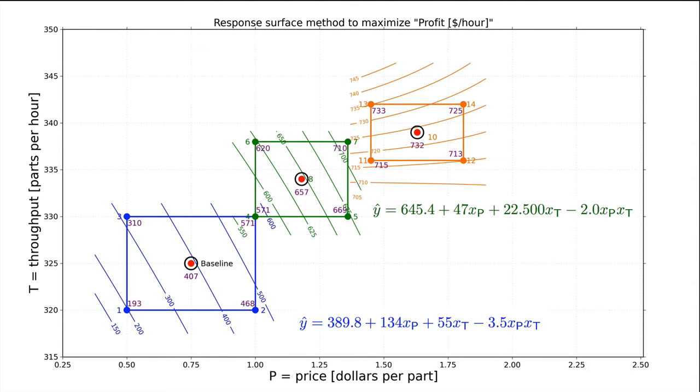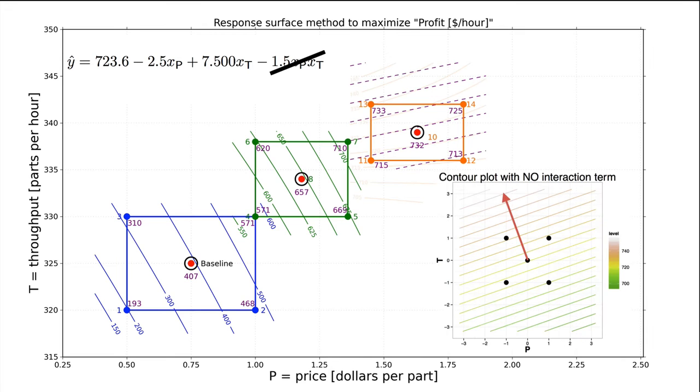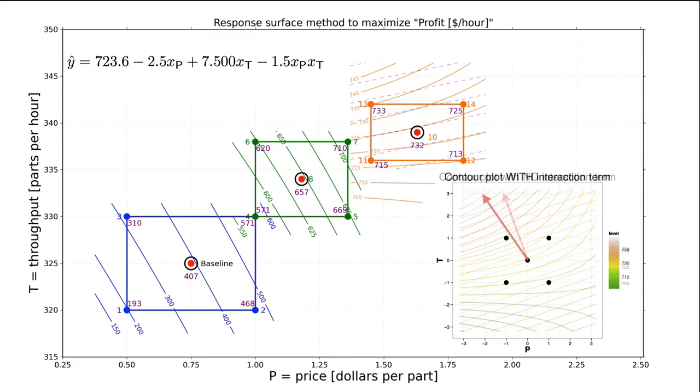In prior models, the interaction term was small. Notice though, that the steepest ascent method will still send us up in the correct direction if we ignore the interaction terms. The interaction term, if we had accounted for it, would send us in a slightly different angle. But in this example, the discrepancy is not so bad. Had the interaction term sent us in a different direction, we would definitely follow that direction instead of the steepest ascent determined only with the linear terms. But more on that to come with this topic of curvature.